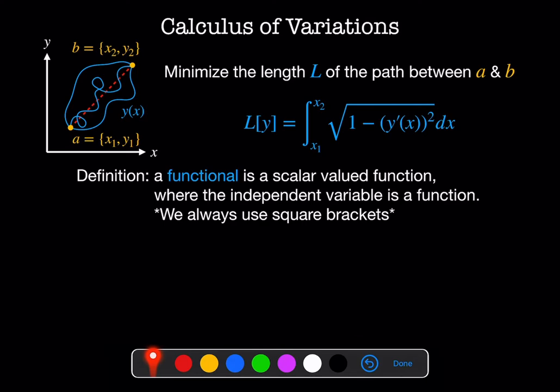In the calculus of variations, we always want to minimize some functional. So let's say I as a functional of y is equal to the integral from some alpha to some beta of our functional f, which is itself a function of y of x, y prime of x, x, and we're integrating over dx.